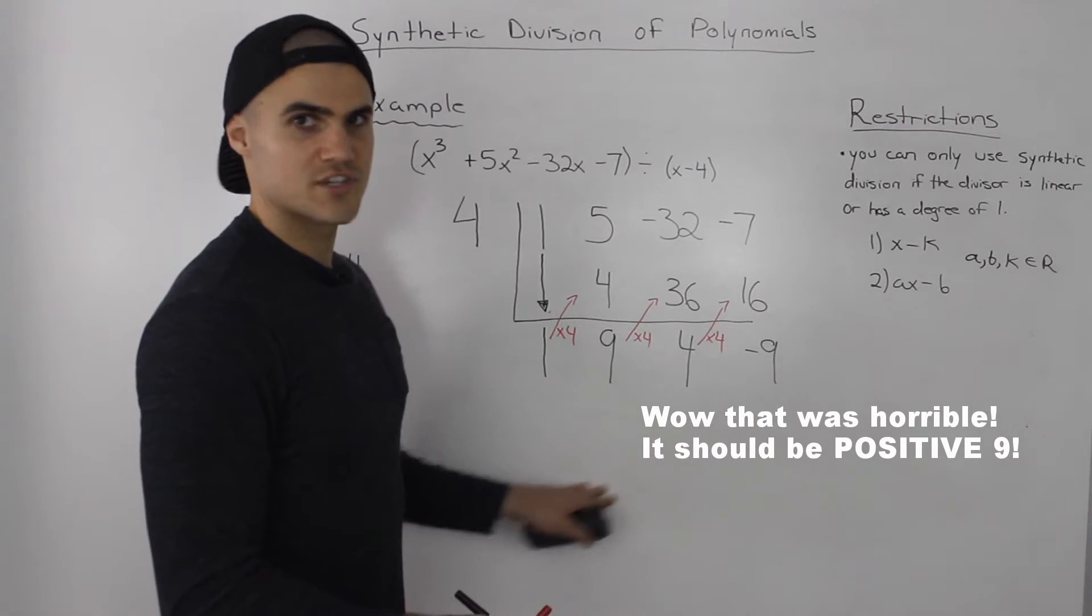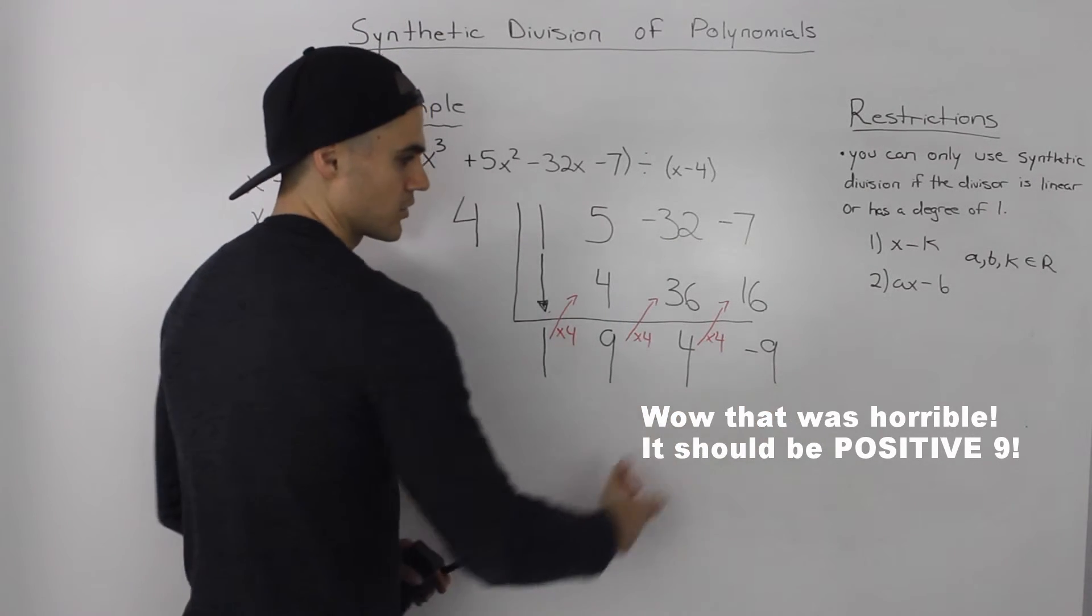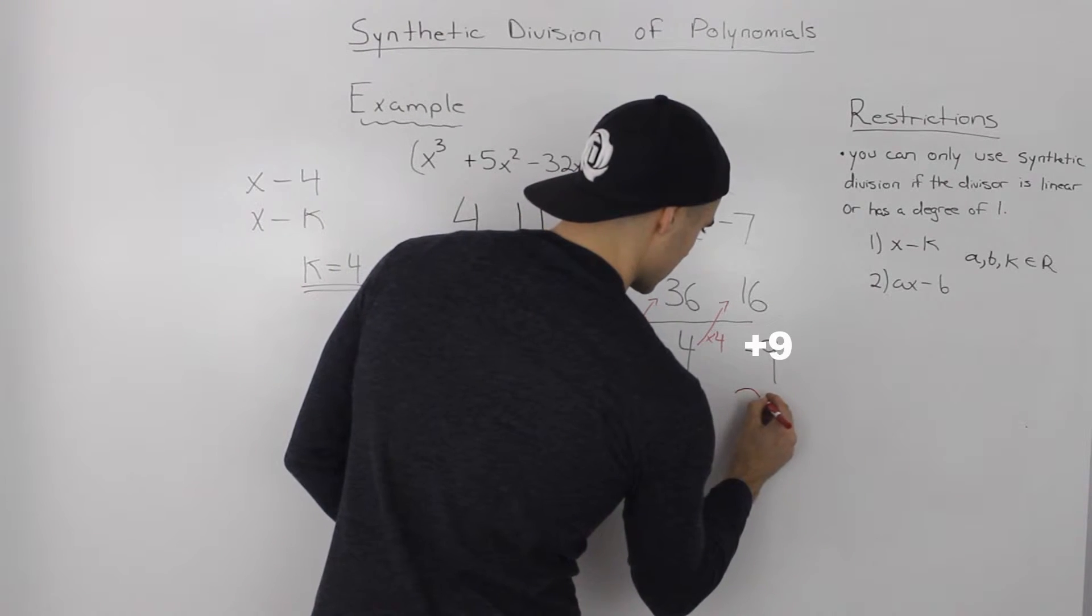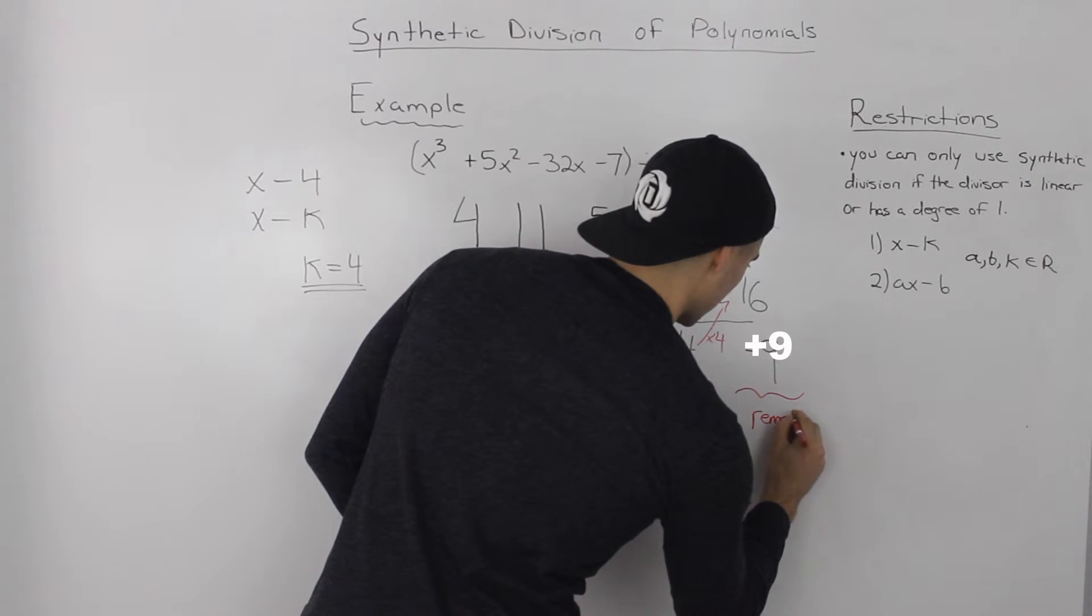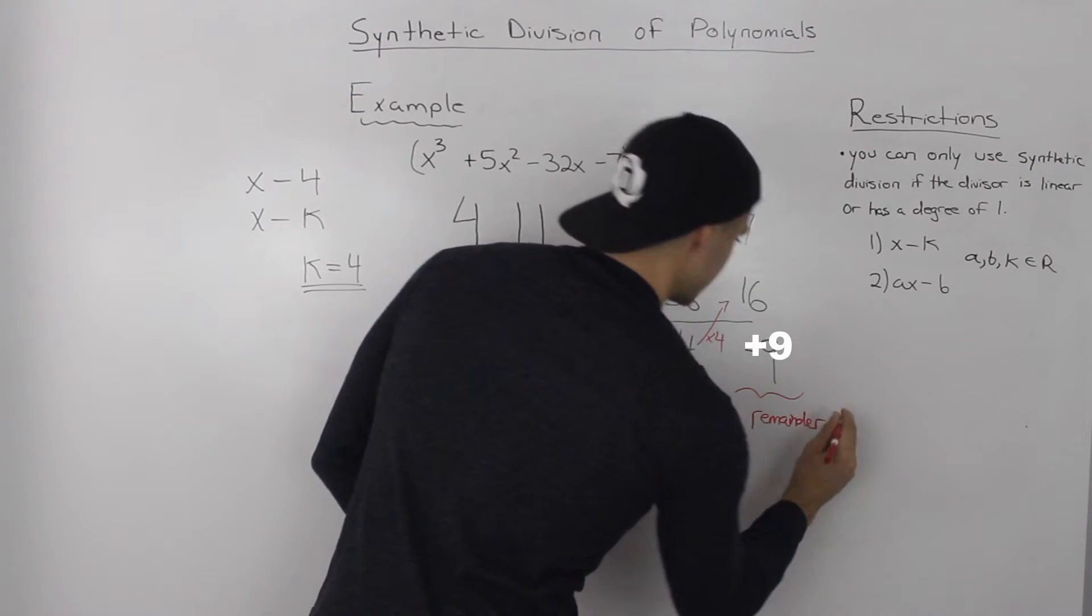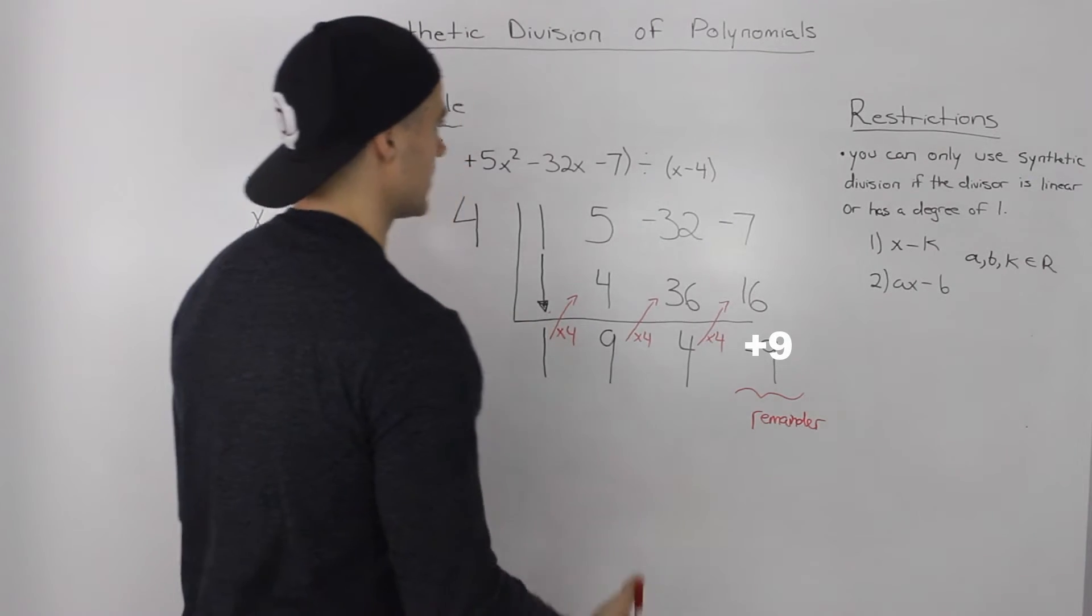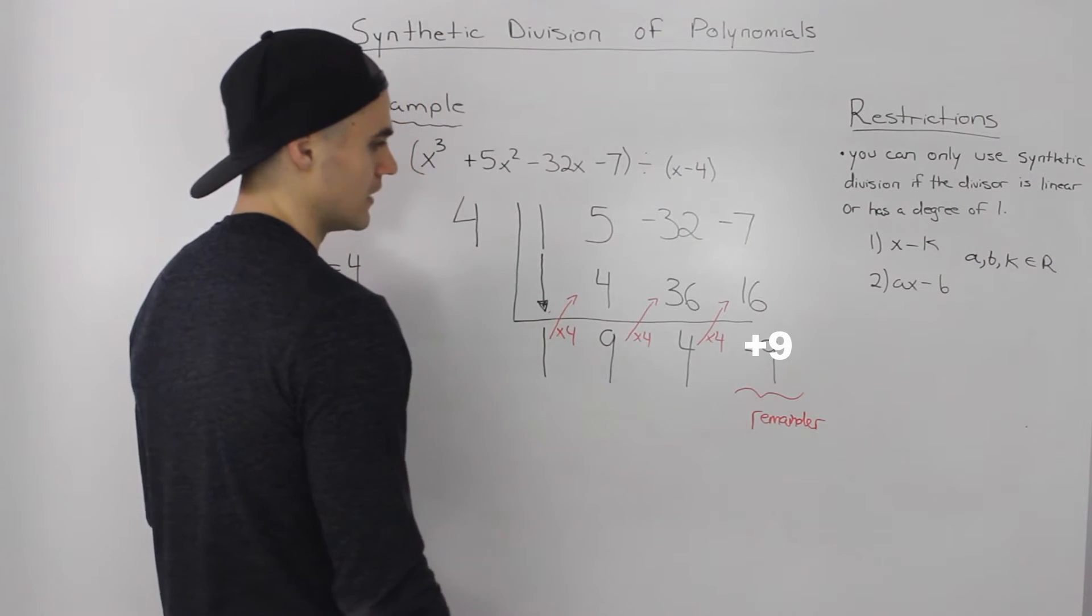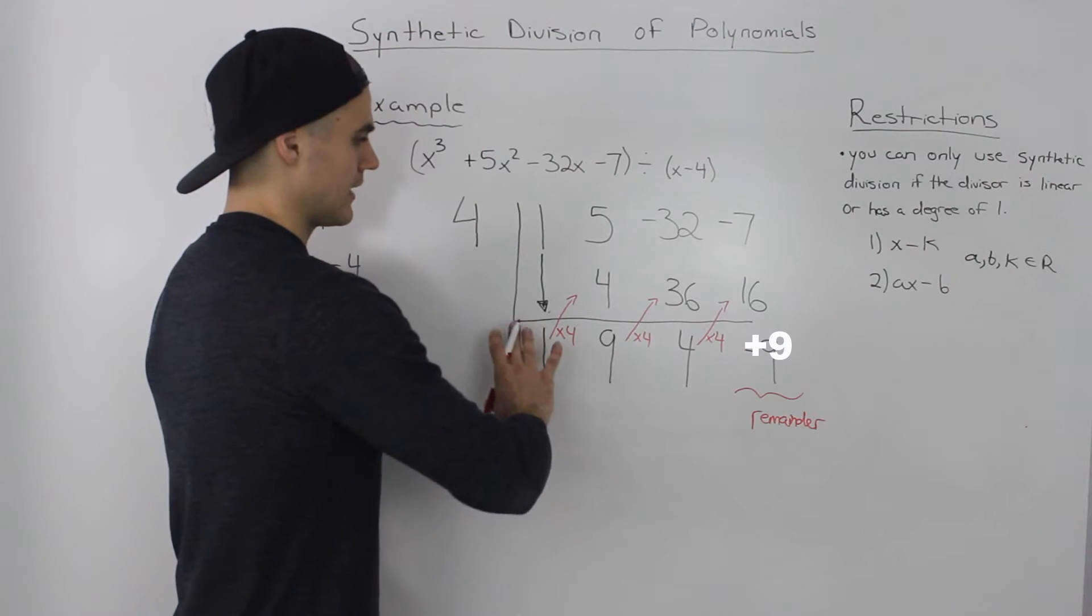Now, what do these numbers here represent? What did we just do? Well, the last number always represents what the remainder is. So this is the remainder. And in synthetic division, the remainder will always be a constant, because our divisor has to be linear, so the remainder would be a degree less than that. So that's our remainder, positive 9.